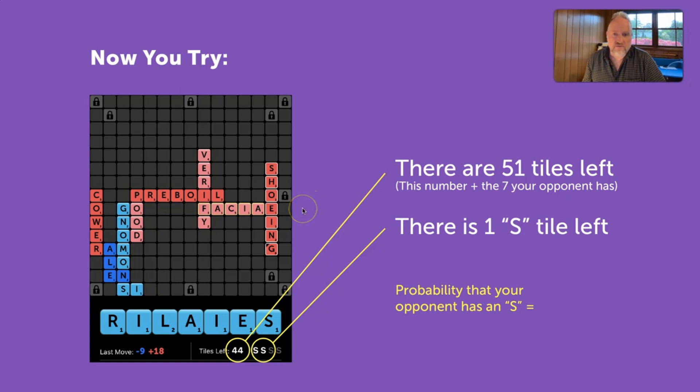So, let's try another one. 51 tiles left. There's one S left. Again, this shows two, but you have one of them. So, one S left. 51 tiles left. What do you think? Alright, I'm going to show 14%. So, this is a very low number here. This would be the spot where I think you would want to maybe play those longer words and hope that they can't be stolen easily.